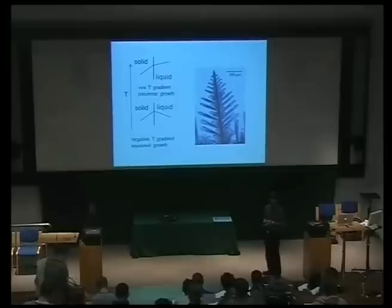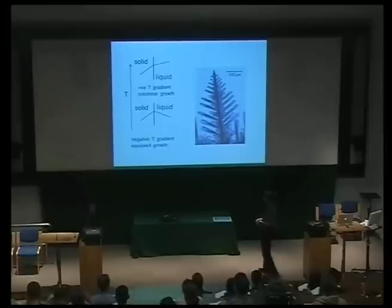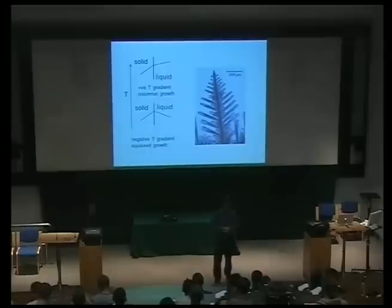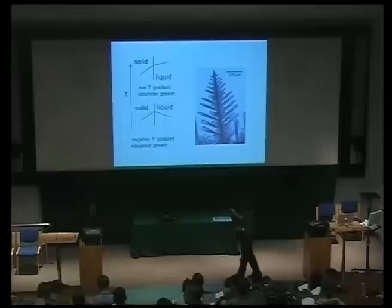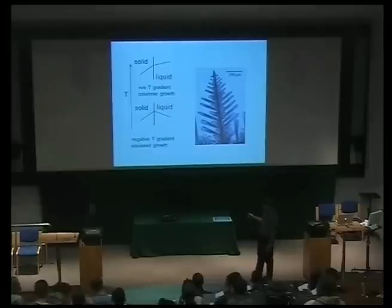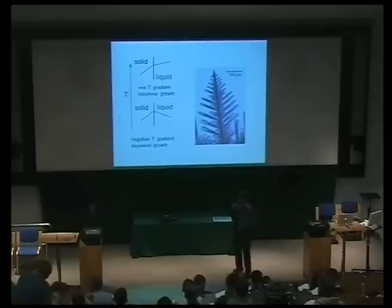If for whatever reason we have a small perturbation in that interface, it is actually advancing into supercooled liquid and therefore it will tend to grow even faster. That's what we call an unstable interface. On the other hand, if we have a positive temperature gradient in the liquid, then any perturbation will tend to dissolve because it's advancing into hot liquid. So an interface like this would be stable, whereas an interface like this would be unstable when you have a negative temperature gradient in the liquid.